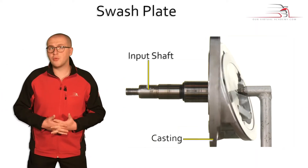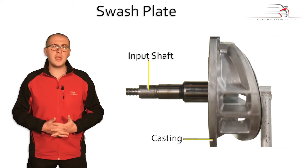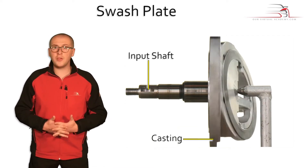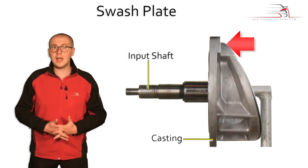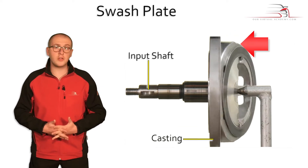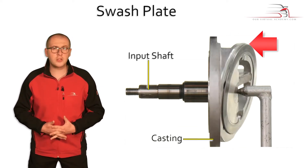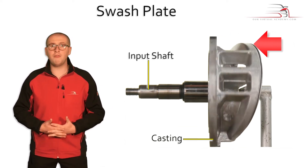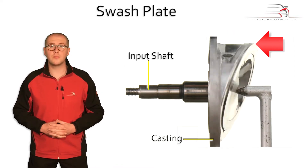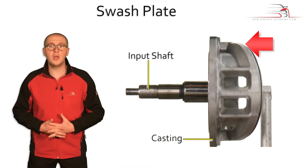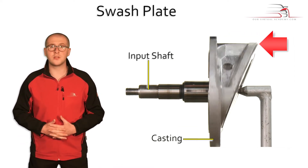When the input shaft rotates, it produces the same effect where the highlighted edge of the casting appears to oscillate back and forth. This fixed oscillation back and forth is known as swash, hence the name fixed swashplate compressors.